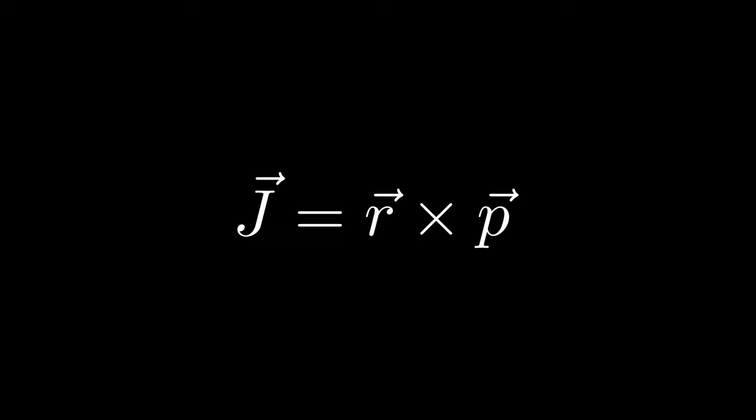To understand spin, we must first understand angular momentum in quantum mechanics. Classically, angular momentum is the momentum of an object in circular motion. It is mathematically defined as a cross product of position and momentum vectors.